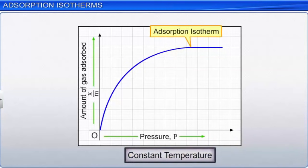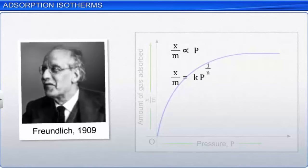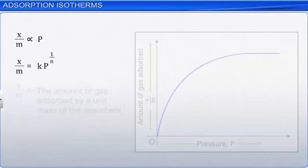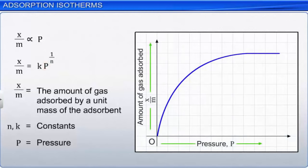Freundlich, in 1909, was the first to propose a mathematical relation for an adsorption isotherm. He gave an empirical relationship between the quantity of gas adsorbed by a unit mass of a solid adsorbent and pressure at a particular temperature. The relation can be expressed as x/m = k × p^(1/n), where x/m is the amount of gas adsorbed by a unit mass of the adsorbent, n and k are constants, and p is the pressure. This relationship is represented in the form of a curve known as the Freundlich adsorption isotherm.